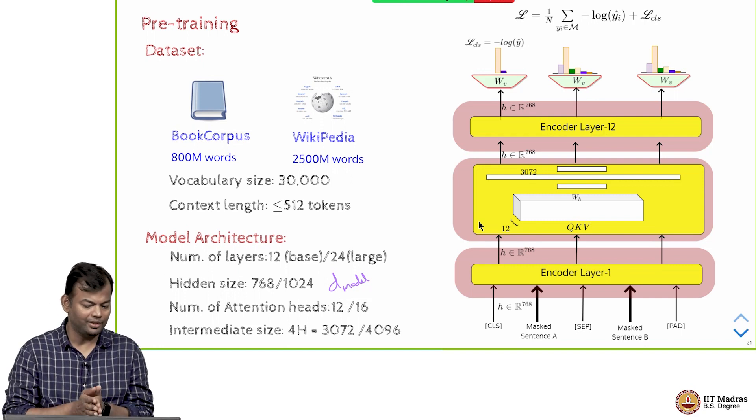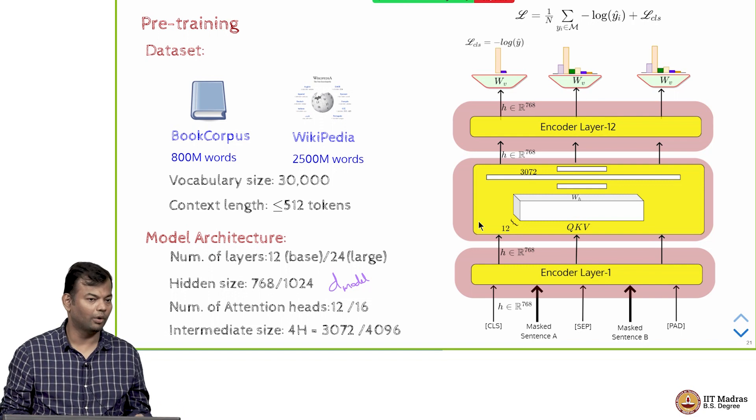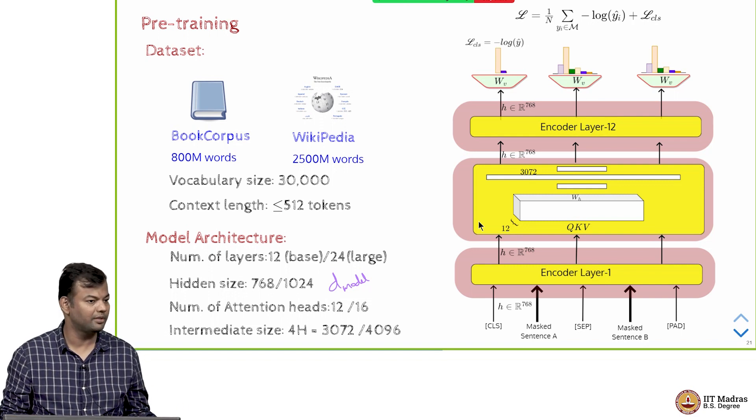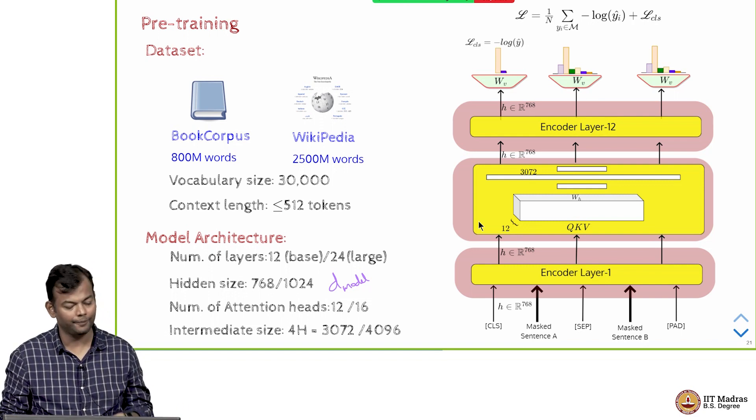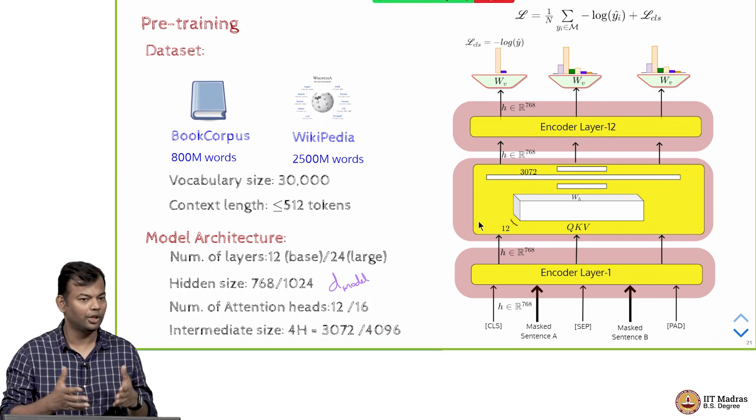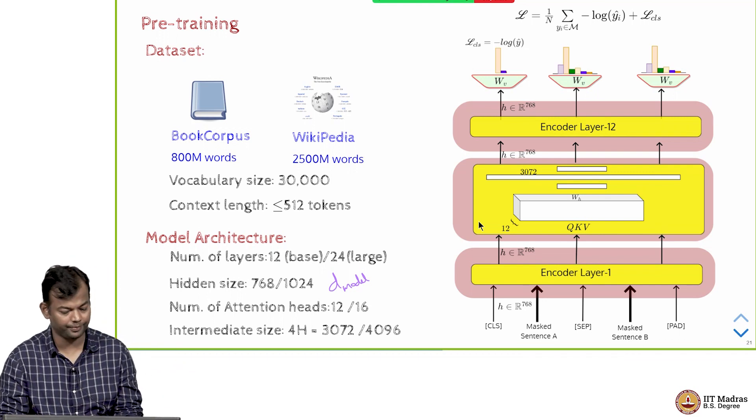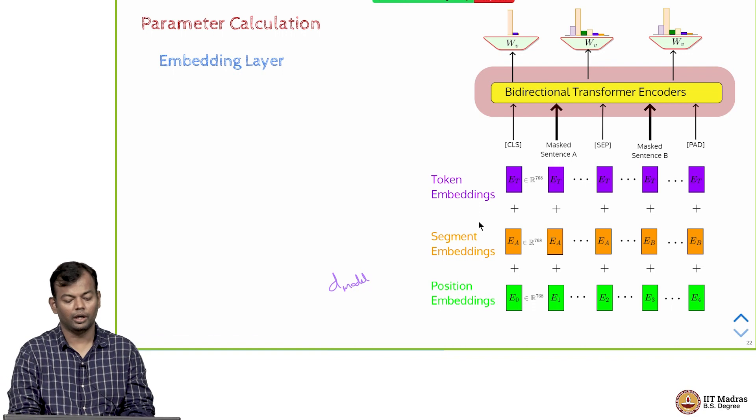If you look at it, once you know the basic transformer architecture, these are the only details you need to know: how many layers, what was the d_model size, number of attention heads per layer, and the size of the feed forward network. If you have this information, you know exactly what the network looks like, and of course the vocabulary size also.